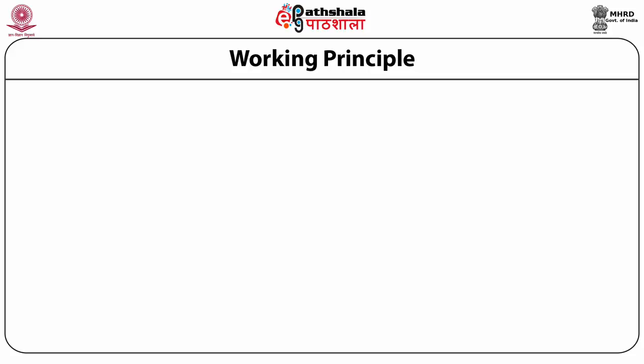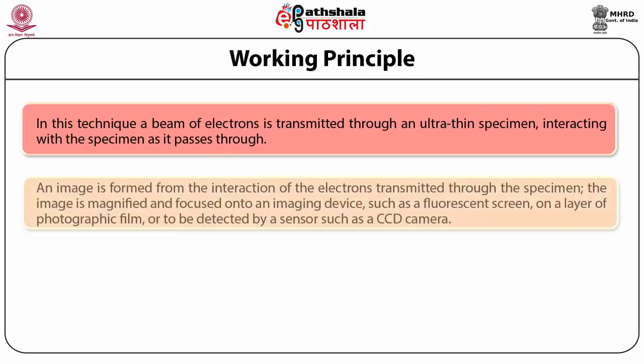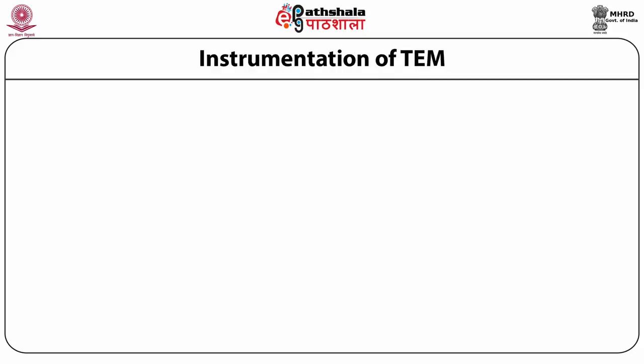Working principle of TEM: an extremely thin sample is required for scanning in this method, from which an electron beam is passed through, rendering its interaction with the sample, as a result of which an image is produced. This image can be magnified and focused on an imaging device like a fluorescent screen, a photographic film layer, or identified by a sensor like a CCD camera. Let us now discuss about the instrumentation of TEM.